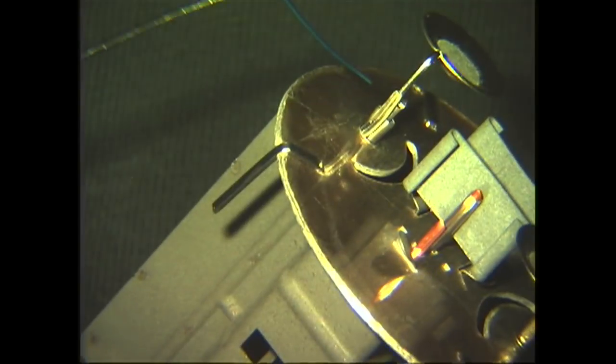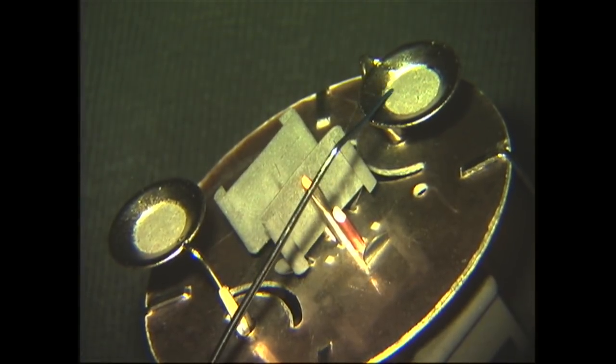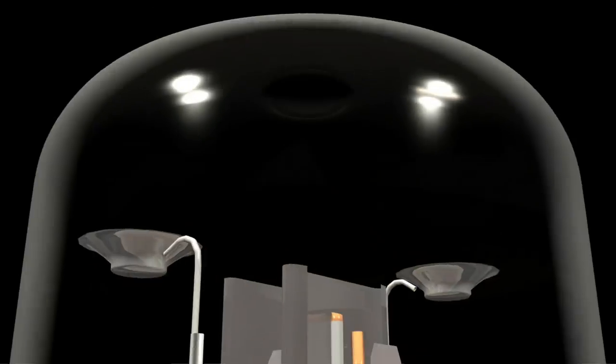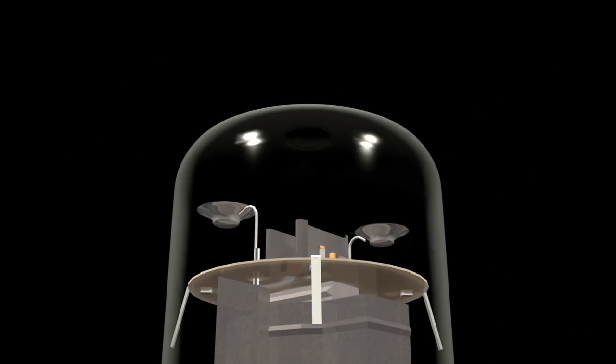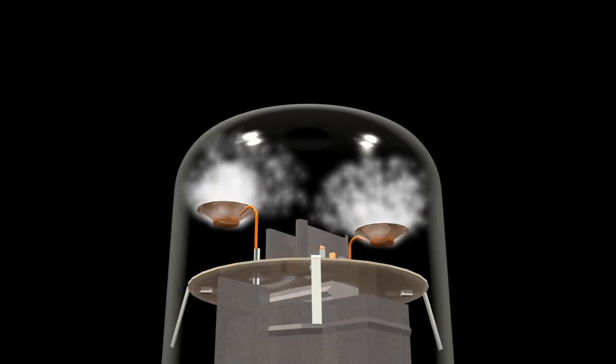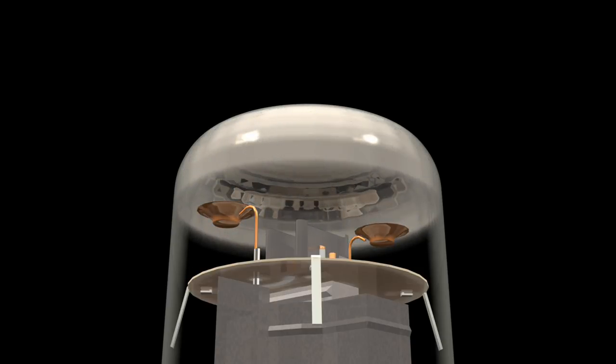These are the getter cups, and here's where they are spot welded to the top of the anode plate. The getter cups are filled with barium, and during final construction of the tube after the air has been removed, these barium-filled getter cups are superheated, and the barium sputters onto the inside of the glass and creates a mirrored finish.